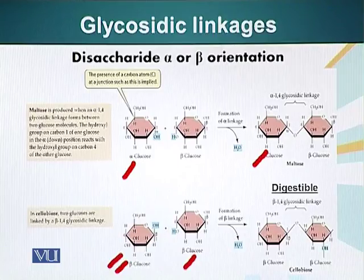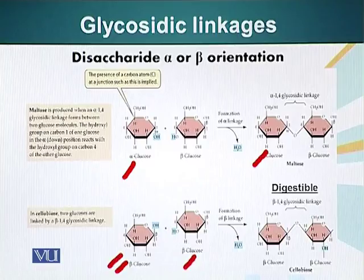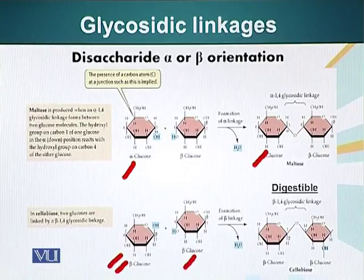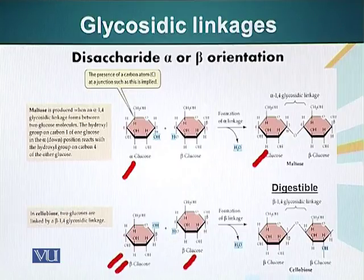In biology, the difference between these two molecules is very significant. The alpha-1,4 bond can be broken down by our enzymes. However, the beta-1,4 bond is very stable and we cannot break this bond. That is why we cannot digest plant materials which have beta-1,4 bonds in them, such as many grasses and many plant structures.